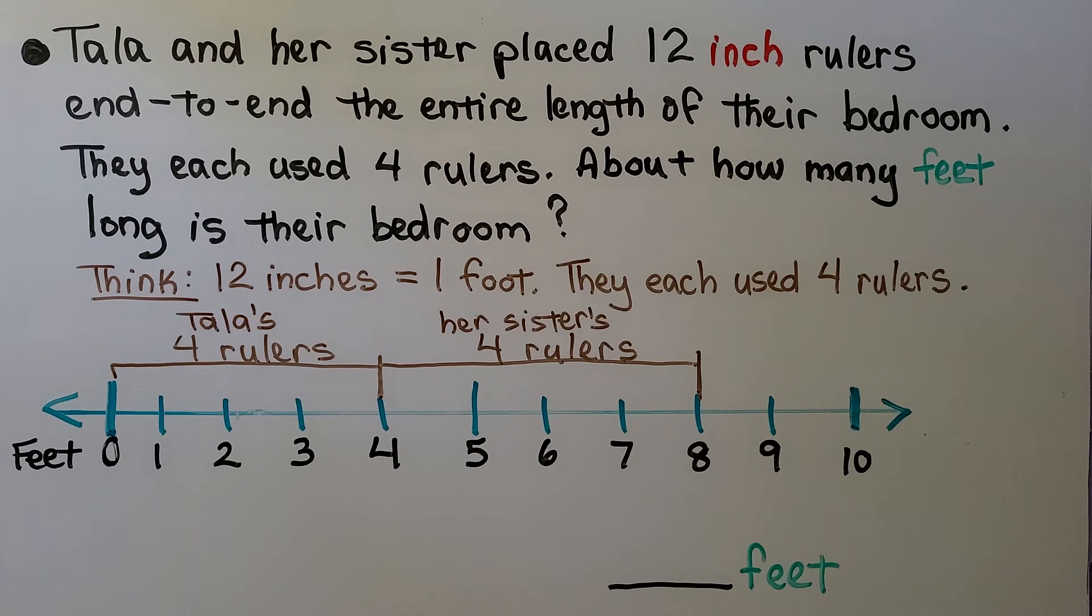Tala and her sister placed 12-inch rulers end to end the entire length of their bedroom. They each used 4 rulers. About how many feet long is their bedroom? We think 12 inches is equal to 1 foot. They each used 4 rulers. There's 2 people, Tala and her sister.